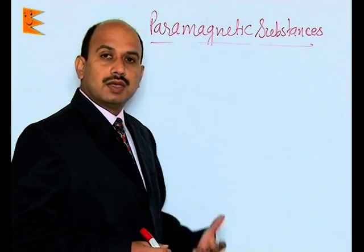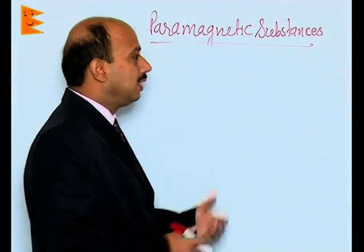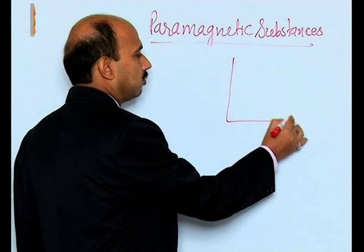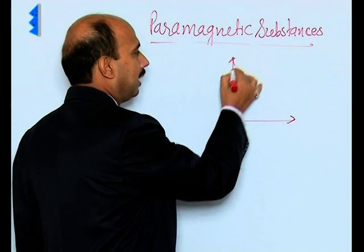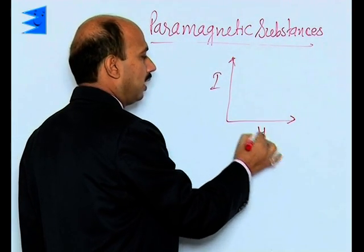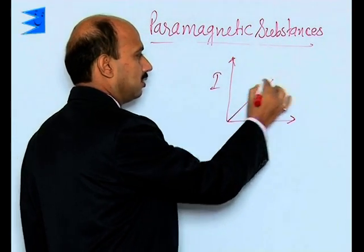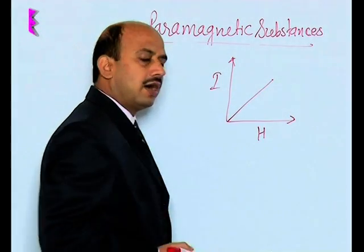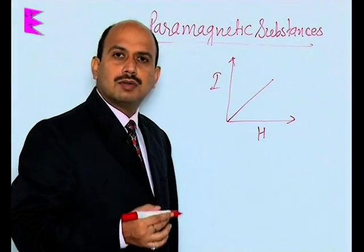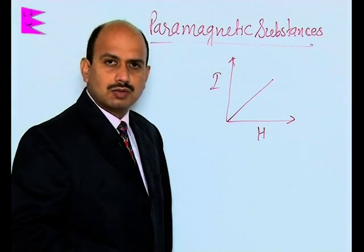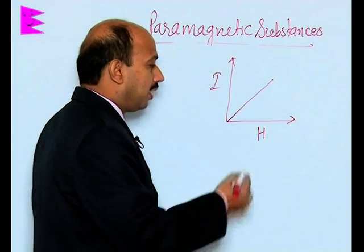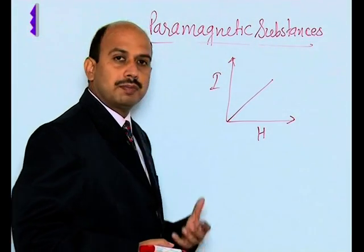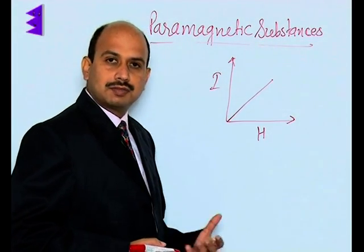The graph between I and H for paramagnetic materials: I is on the vertical axis, H is on the horizontal axis. The graph changes linearly and has a positive value.